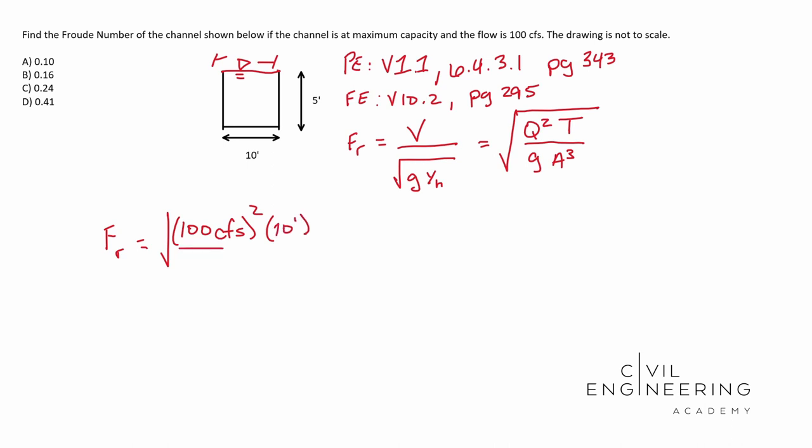And then we divide that by our gravity. Our gravity is 32.2 feet per second squared. That's a good number to memorize.